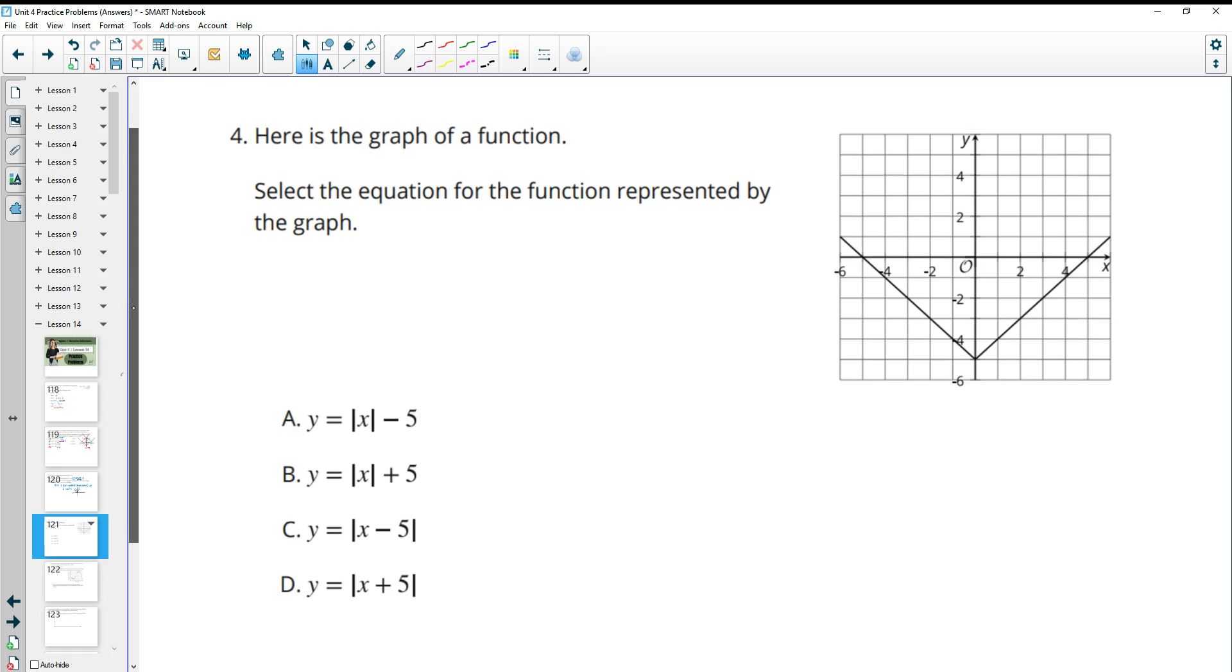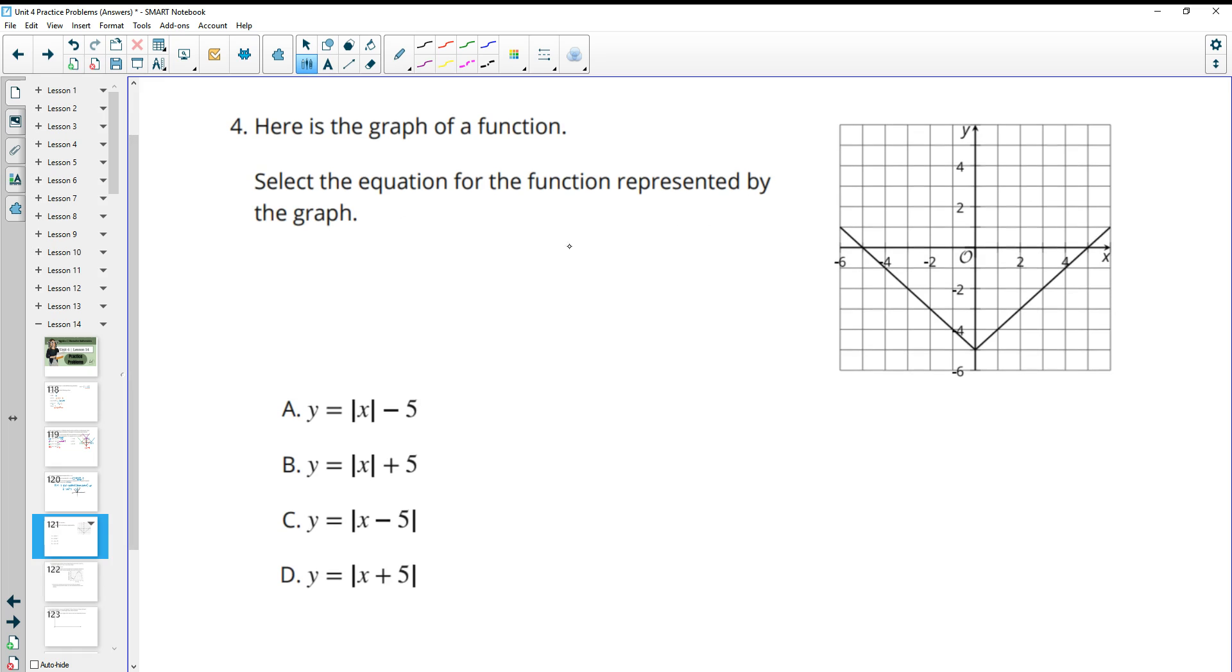Number 4, here's the graph of a function, select the equation for the function represented by this graph. So it looks like our absolute value function because we have that V. So all the absolute value functions are in a V. And this one is just moved down 5 units to get us to this vertex of 0, negative 5.